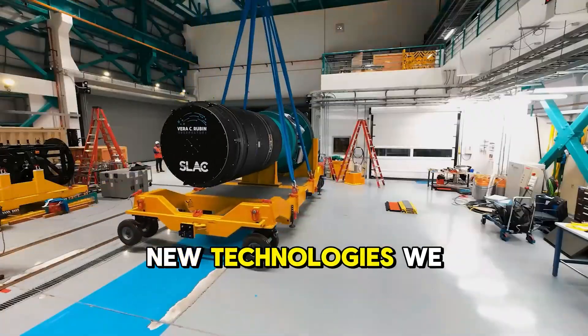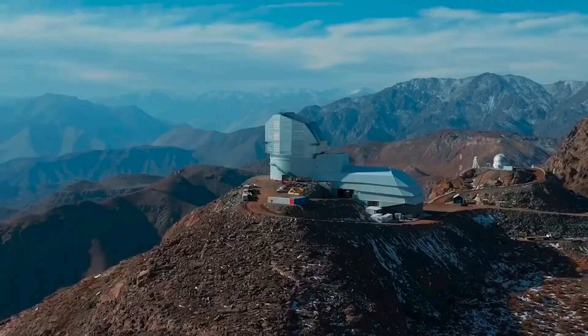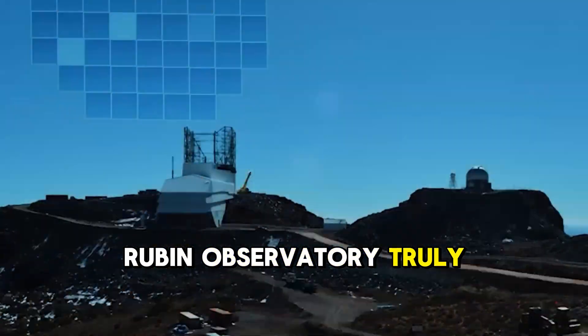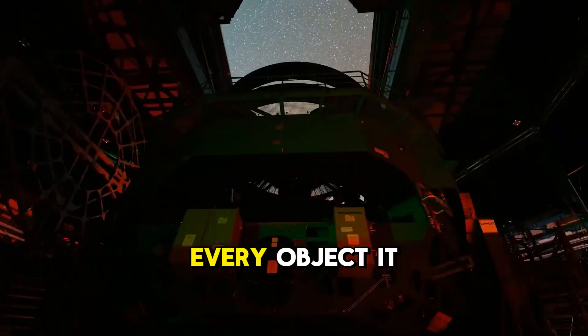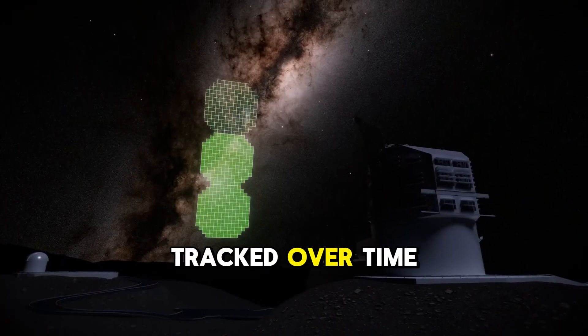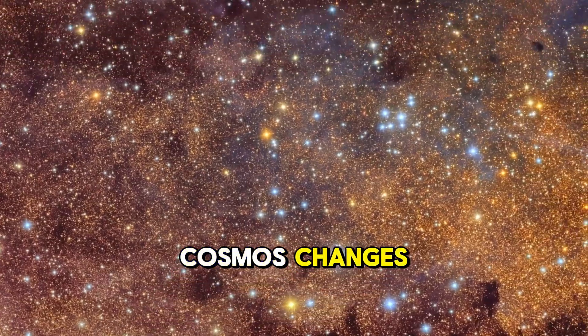What makes the Rubin Observatory truly revolutionary is that it's creating the first ever movie of the universe. Every object it photographs will be tracked over time, showing how the cosmos changes.